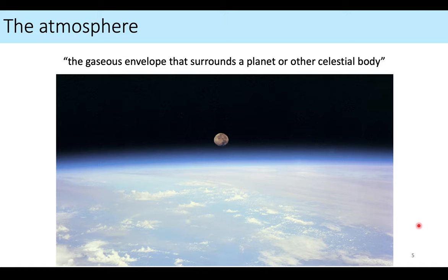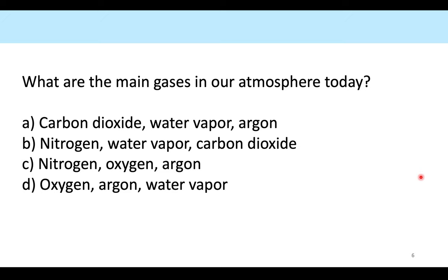Our atmosphere is by definition the gaseous envelope that surrounds the planet. Here's a picture of the Earth with the Moon in the distance — you can actually see that very thin gaseous envelope. As a quick review, the most abundant gas in our atmosphere today is nitrogen, the second most abundant is oxygen, and the third most abundant is argon.